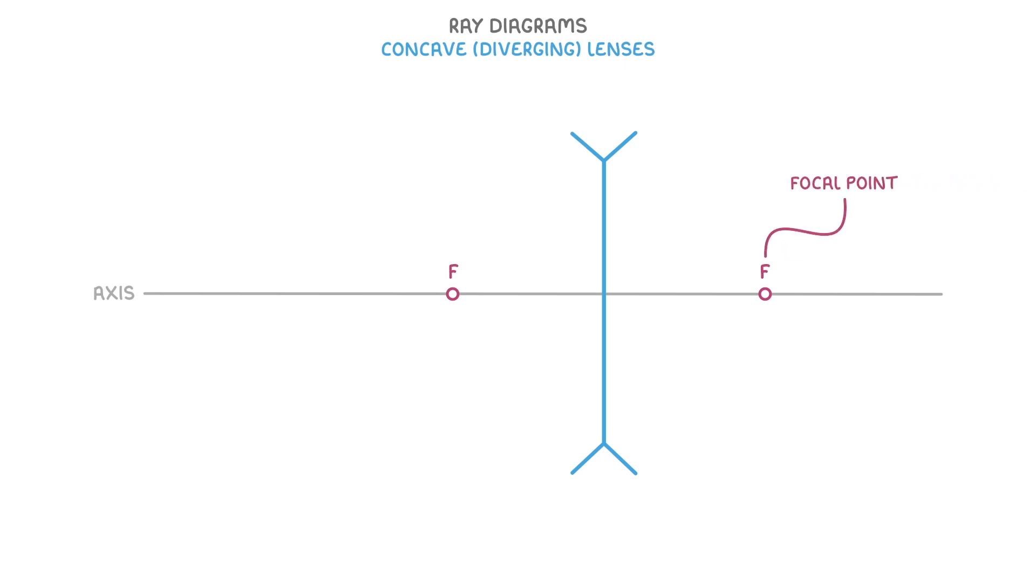And you might sometimes hear the focal point being called the principal focus instead, but they both mean exactly the same thing. We also normally add another dot on either side, that are twice as far away from the lens as the focal points, and we label this one 2f. These will become important later on when we do convex lenses.